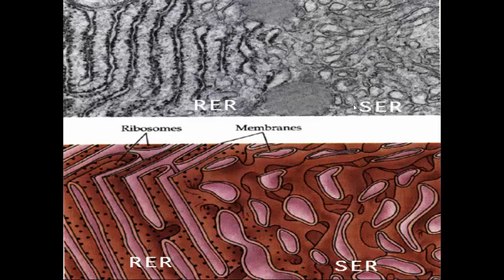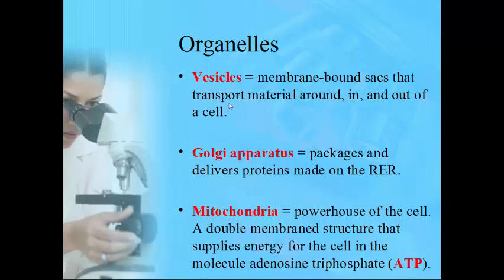So smooth ER handles lipid synthesis, and rough ER is where you'll find ribosomes. Vesicles are small membrane-bound sacks that help transport material in, out, and around the cell — materials can't just enter or move throughout the cell by themselves. The Golgi apparatus, sometimes called the Golgi body, helps package, finalize, and deliver proteins made on the rough ER to various parts of the cell that need them.